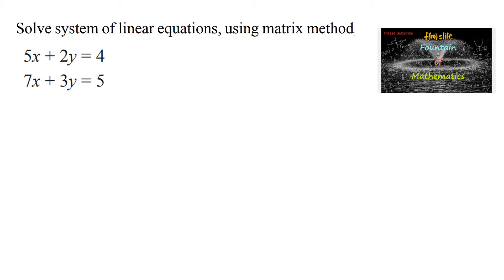Solve a system of linear equations using matrix method: 5x plus 2y equals 4, 7x plus 3y equals 5. Here we can write the coefficients as 5, 2, 7, and 3, and the variables we are using are x and y.